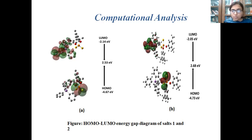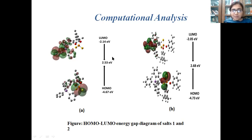Here we represent the HOMO-LUMO energy gap diagram of the two salts, where HOMO represents the highest occupied molecular orbital and LUMO represents the lowest unoccupied molecular orbital. In both salts, the major electron density in the HOMO is present over the tetraphenyl arsonium moiety. An energy gap of 2.53 eV and 2.68 eV in the two salts respectively indicates the polarizable nature and the chemically soft nature of both salts.